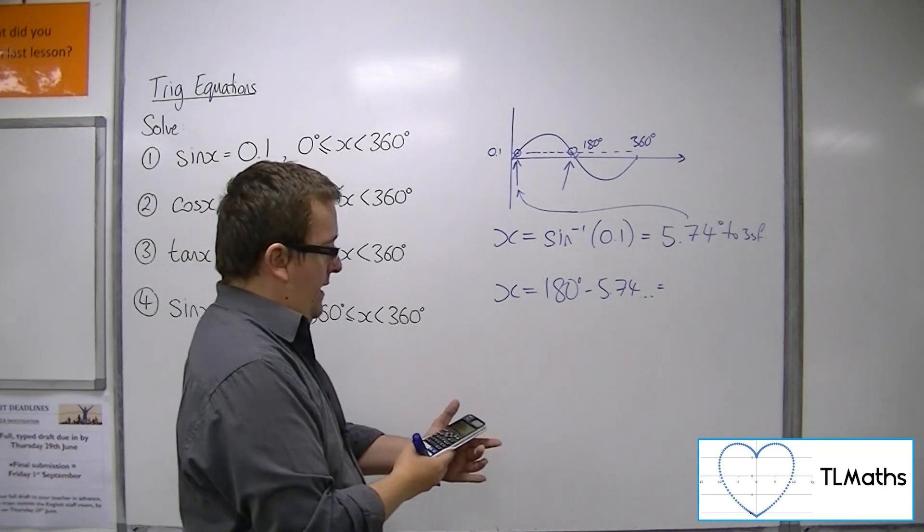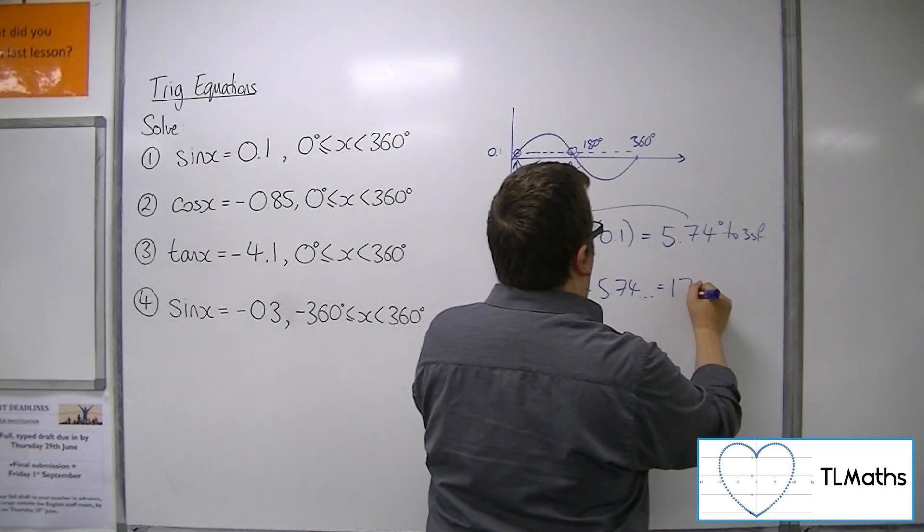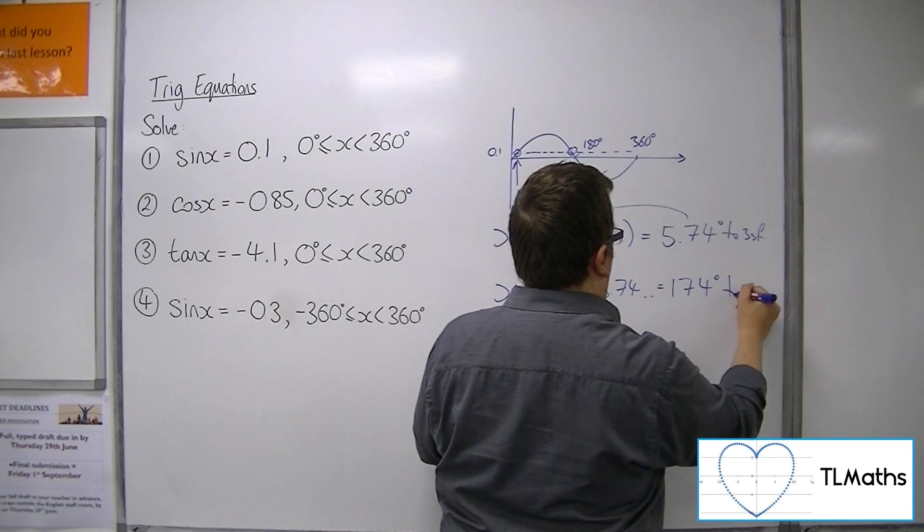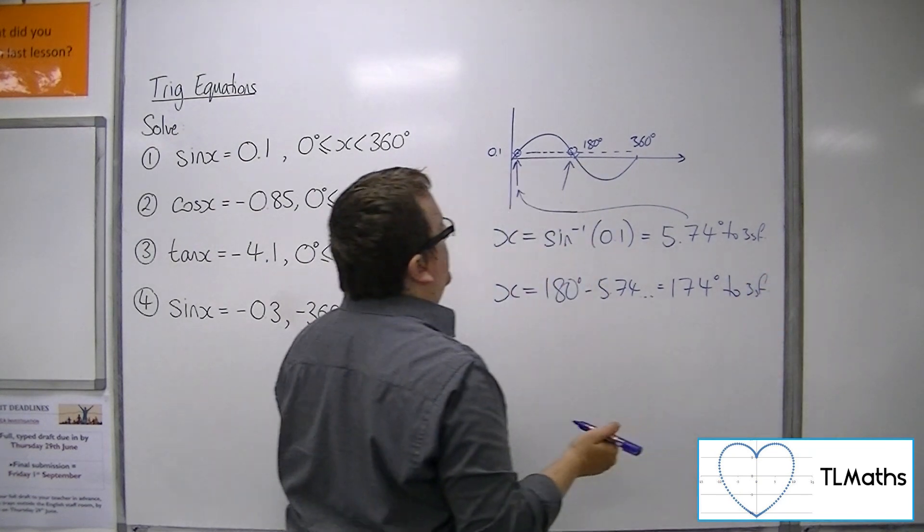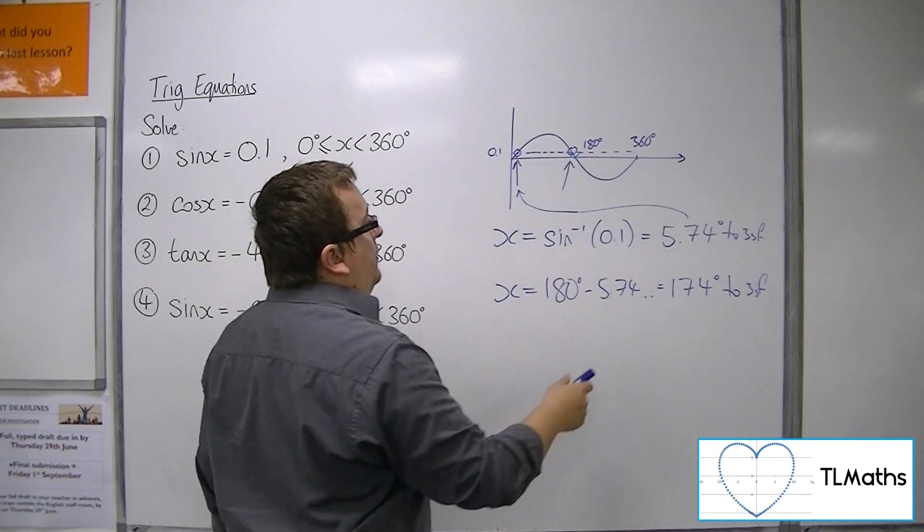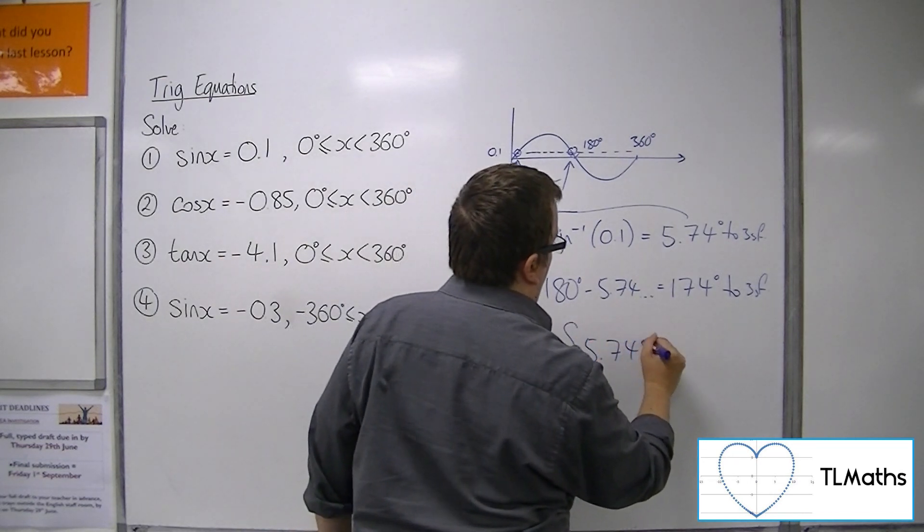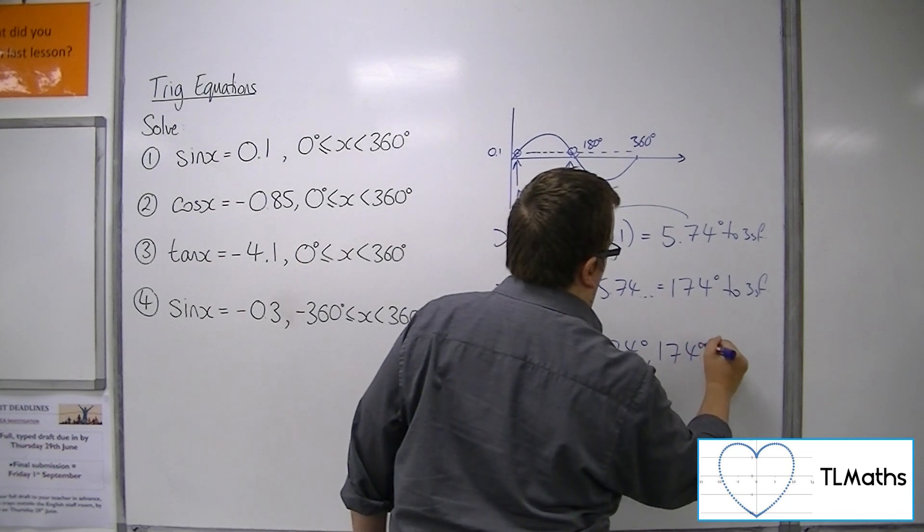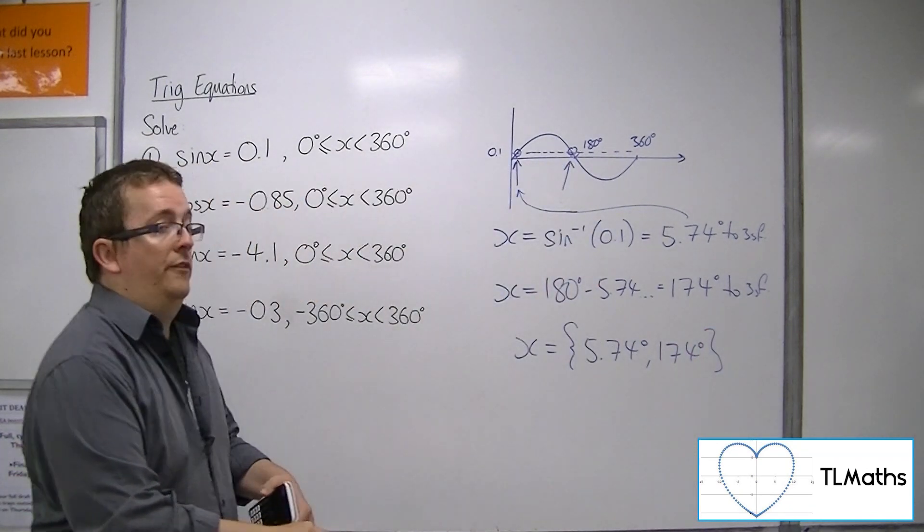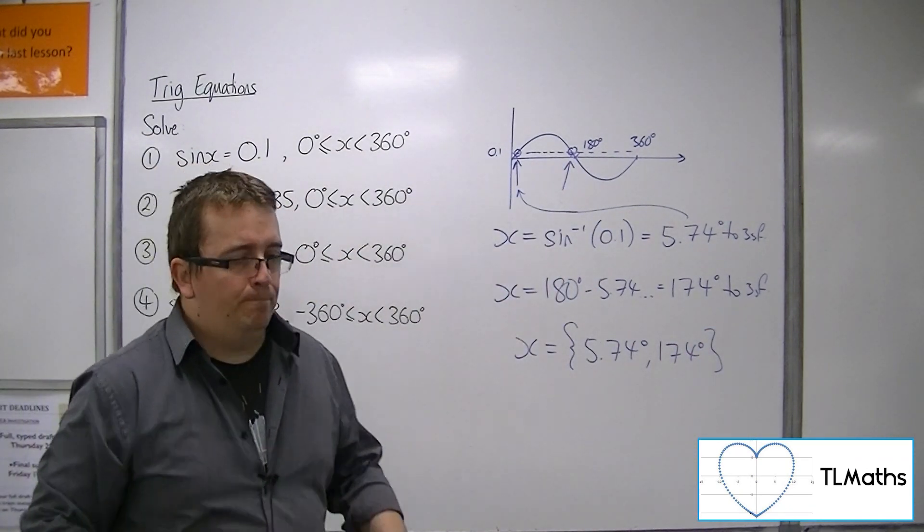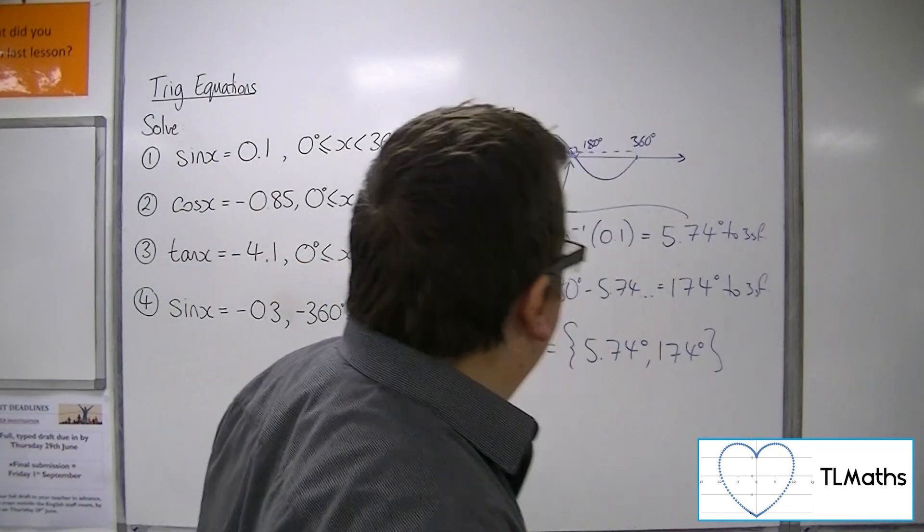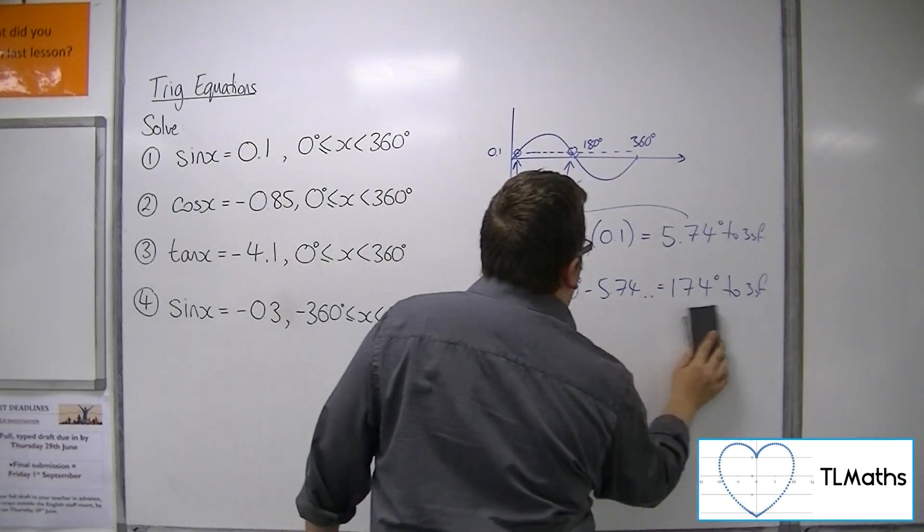So 180 take away that answer is 174 degrees to three significant figures. So these are the two solutions to this problem, to three significant figures. So that's number one.